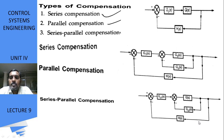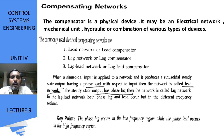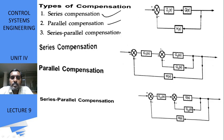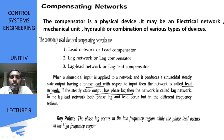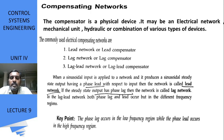The compensator is a physical device — it may be an electrical network, mechanical unit, hydraulic unit, or a combination of both. We are going to add either an electrical or mechanical network to the given system to improve its performance. The commonly used electrical compensating networks are mainly three types: lead network, also called lead compensator; lag network, also called lag compensator; and lag-lead compensator.